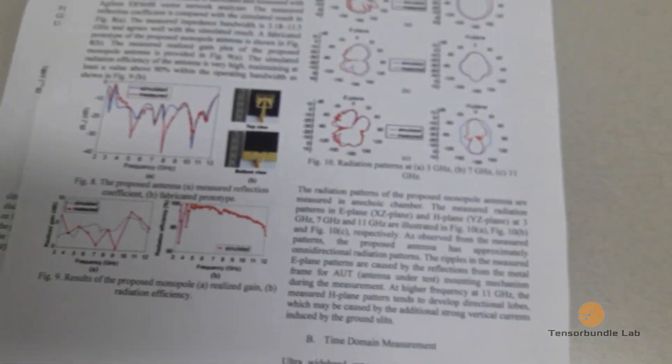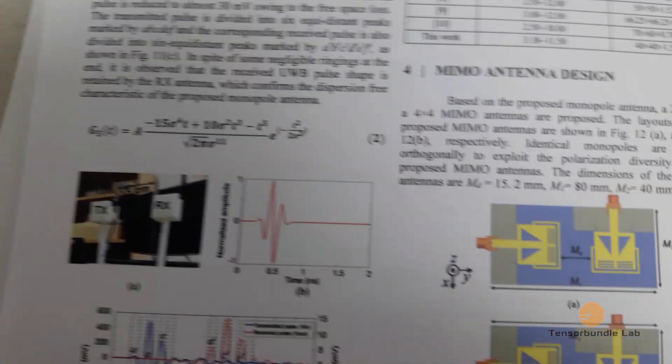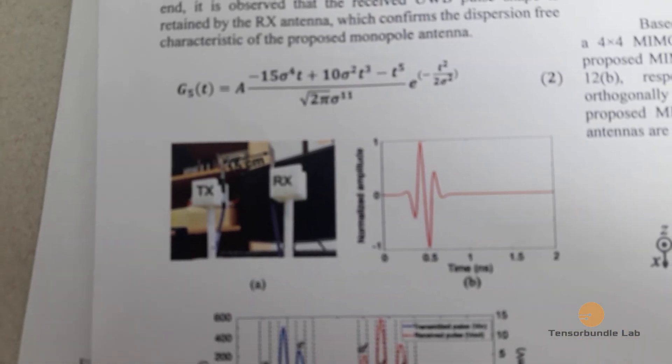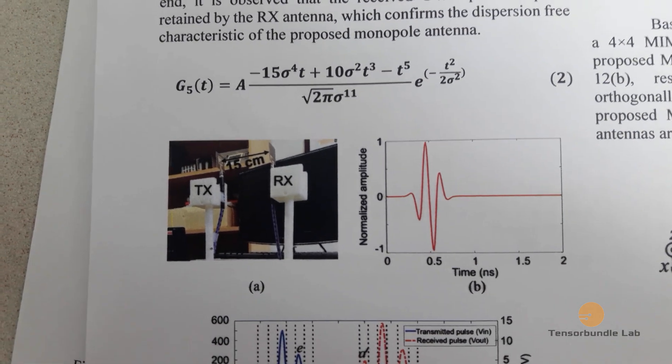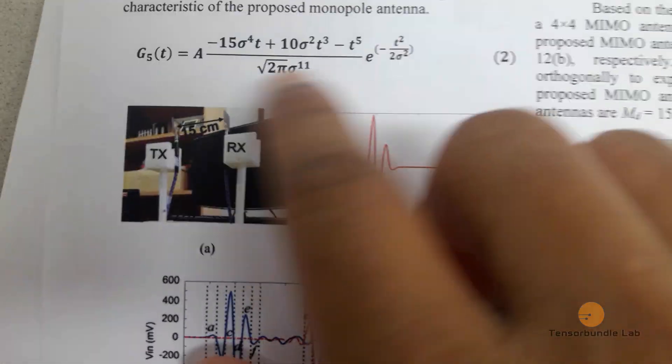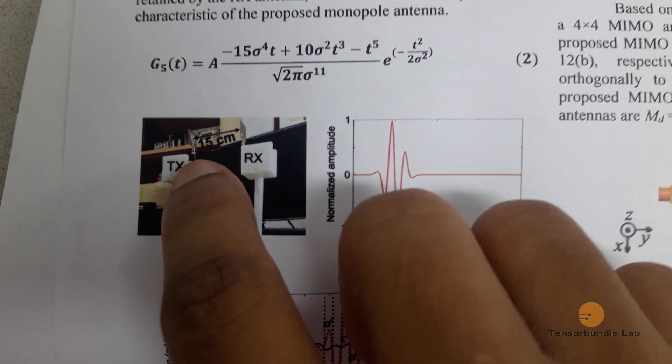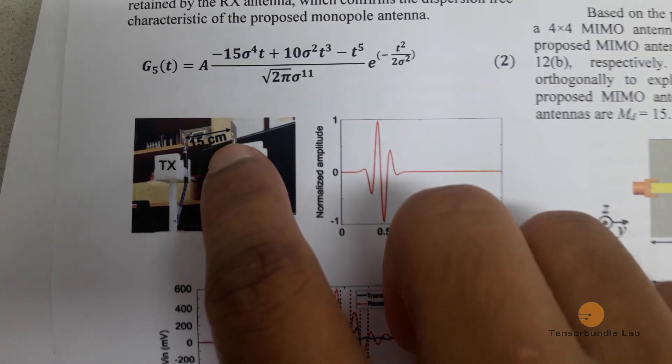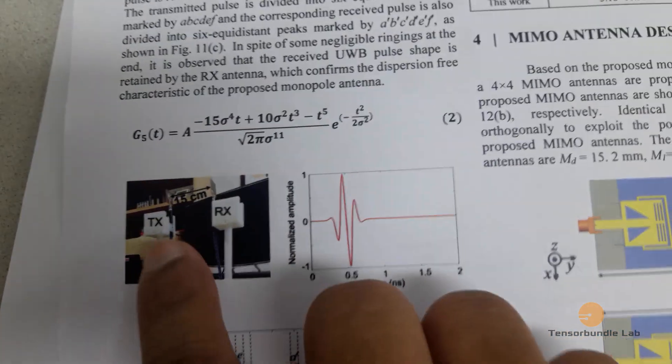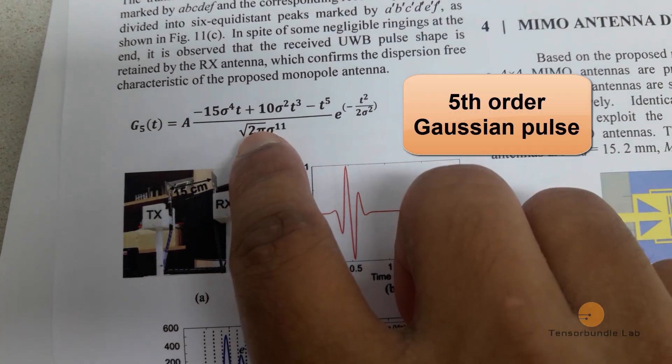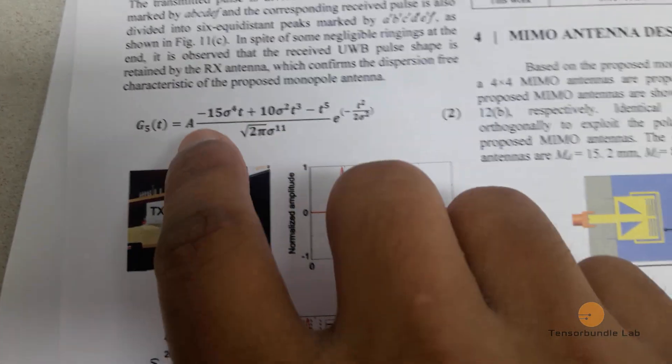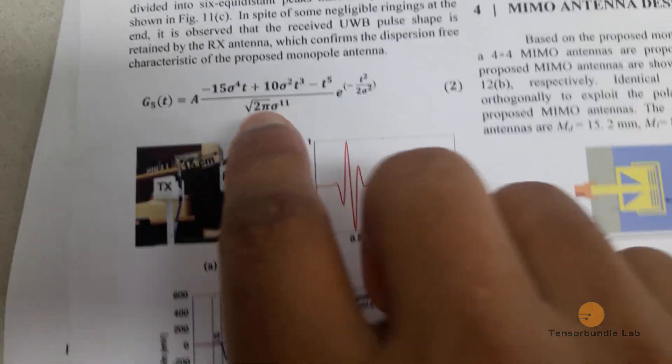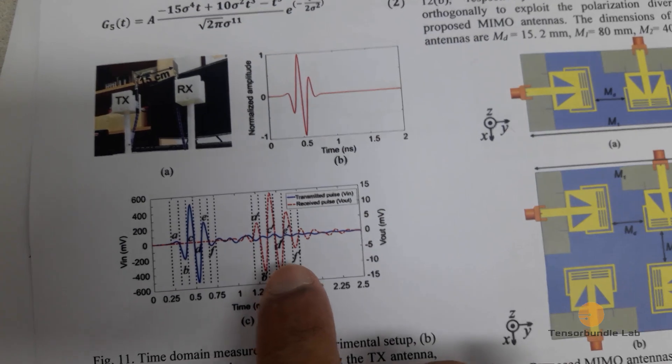We also conducted time domain experiments where we placed two identical antennas face to face. Here you can see this is a transmitter antenna and this is a receiver antenna separated by 15 centimeters. Then we excited this transmitter antenna using a fifth order Gaussian pulse having a peak magnitude and a time constant of sigma, and then we measured the received pulse.